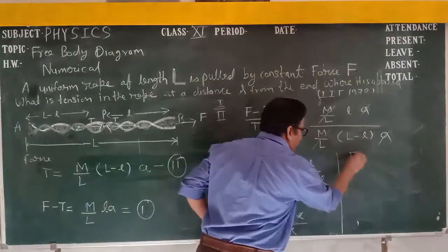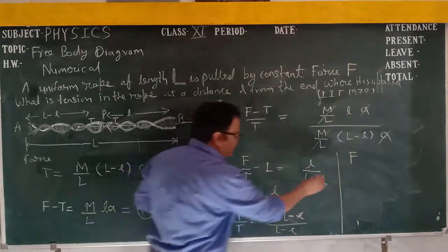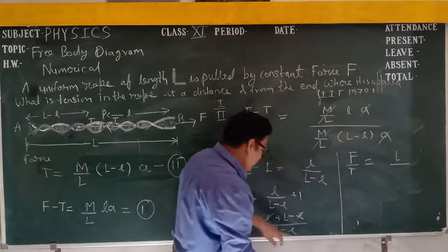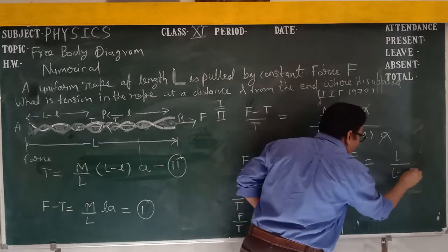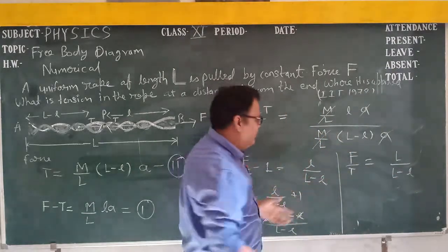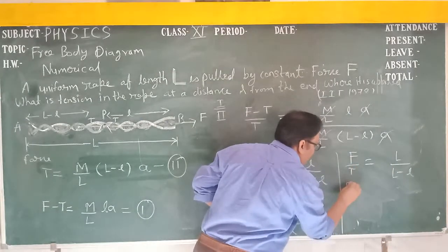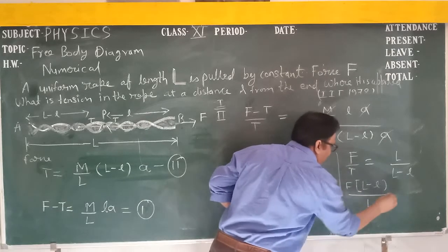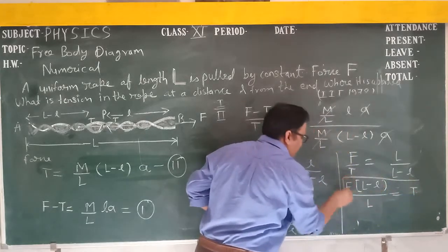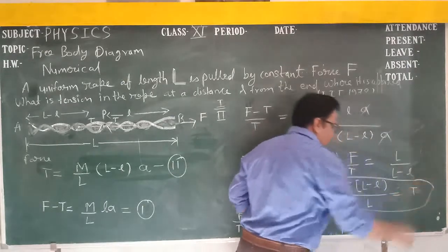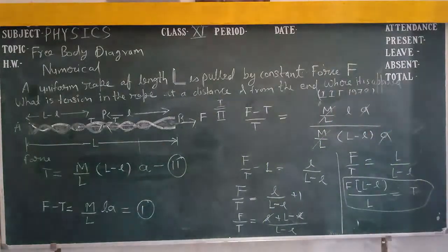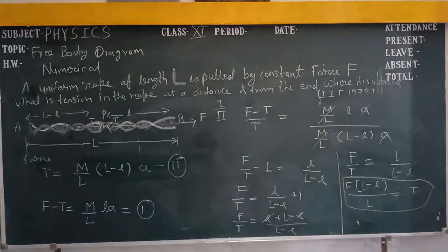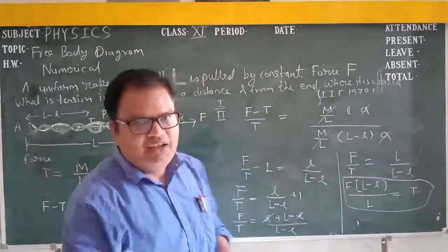So F upon T equals l upon (L minus l) plus 1. Taking LCM: F upon T equals [l plus (L minus l)] upon (L minus l), which simplifies to L upon (L minus l). Cross multiplying: T equals F·(L minus l) upon L. That is our answer.